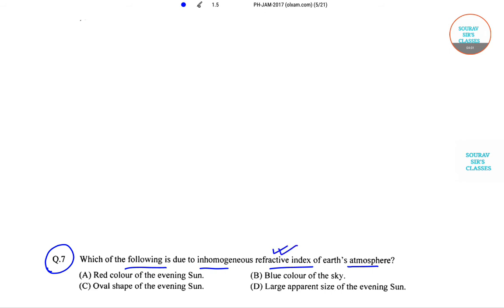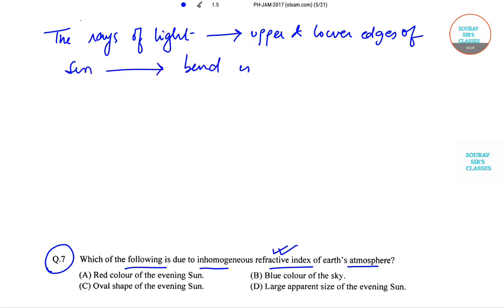So let us know what this refractive index actually does. Okay, so the rays of light from the upper and lower edges of sun bend unequally due to this inhomogeneous refractive index of Earth's atmosphere.